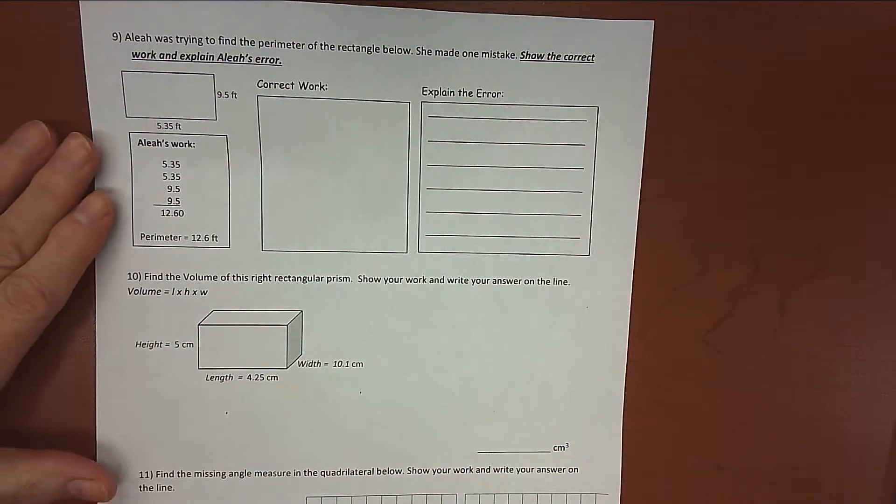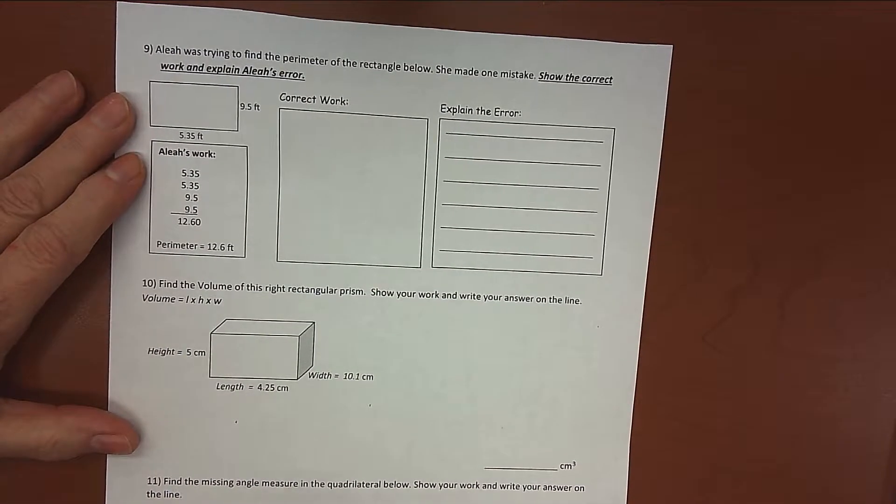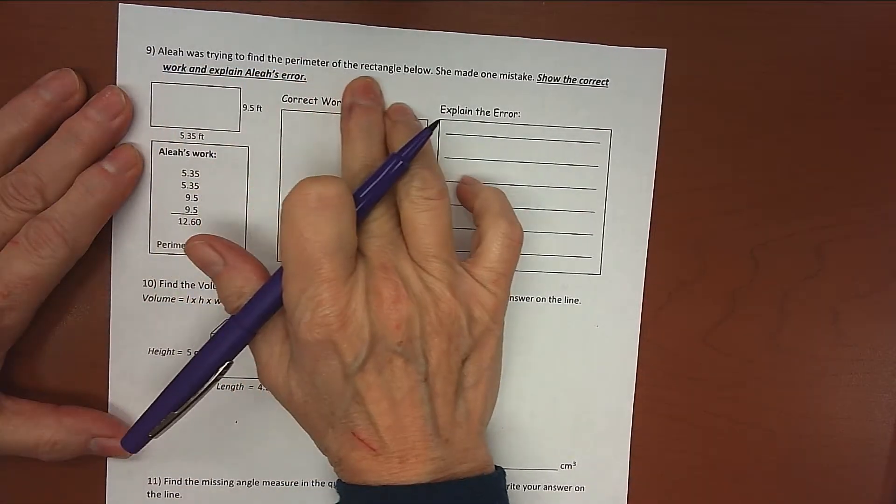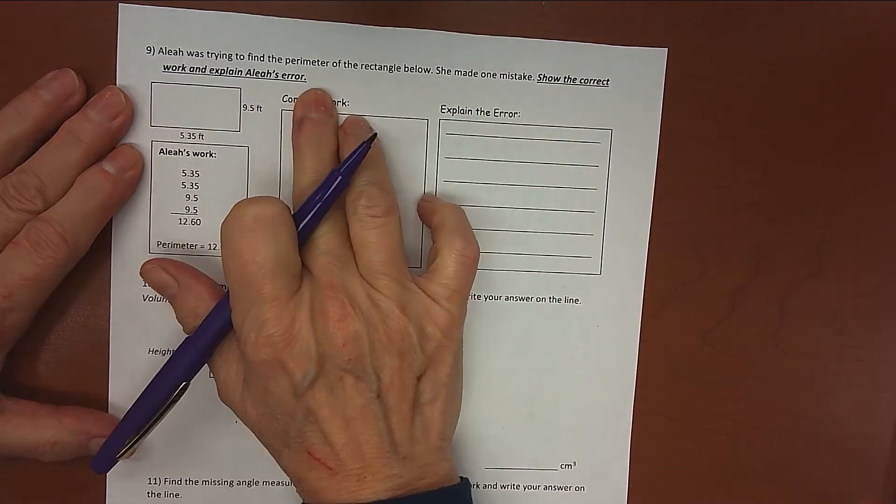All right, here's page 3 of our Unit 2, Part 2 study guide. The directions here say, Aaliyah was trying to find the perimeter of the rectangle below. She made one mistake, show the correct work, and explain Aaliyah's error.